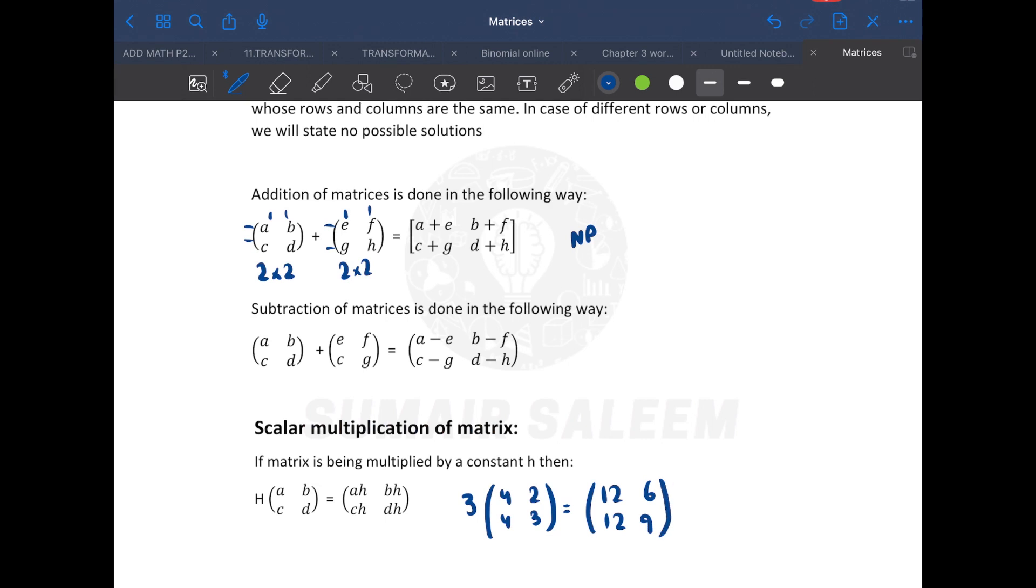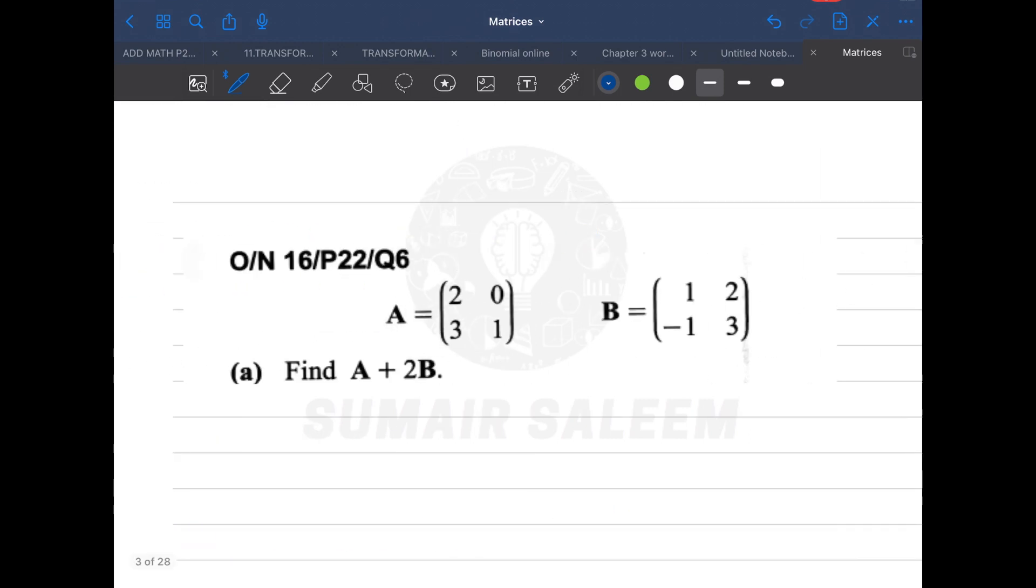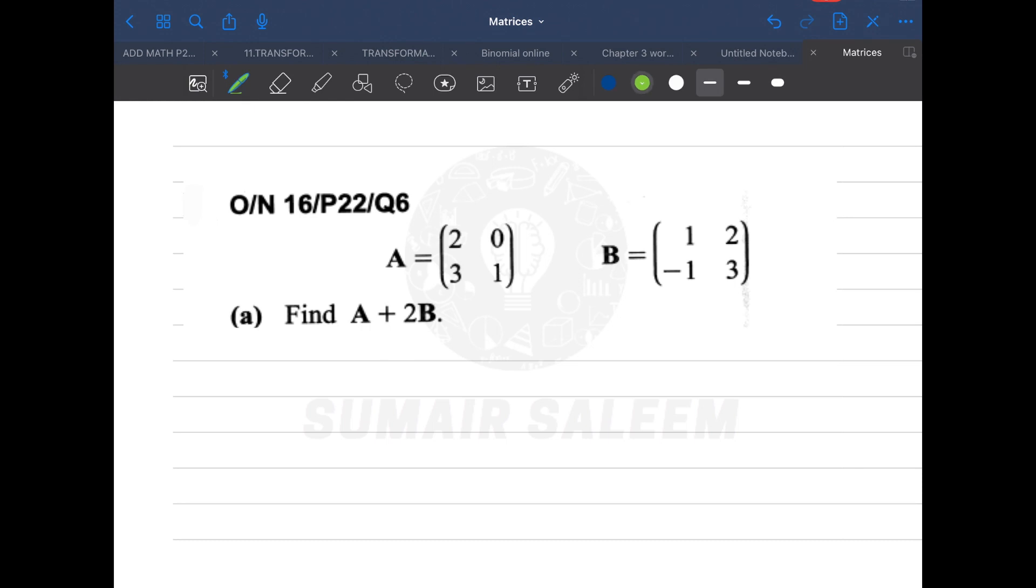Now based on addition and subtraction, we're solving a few questions. Let's begin. The first question says A plus 2B. What's A? 2, 0, 3, 1. And what's B? 1, -1, 2, 3. It's going to become 2, 3, 0, 1 plus 2 times B: 2, -2, 4, 6. Now the orders are the same, it can be added. 2 plus 2 is 4, 0 plus 4 is 4, 3 plus -2 is 1, 1 plus 6 is 7. Got this?